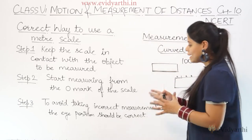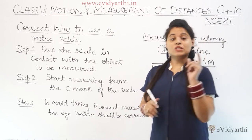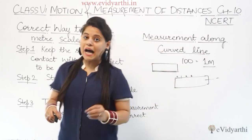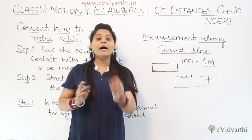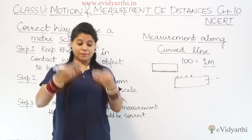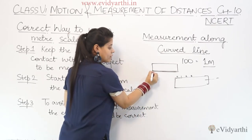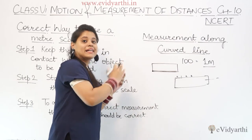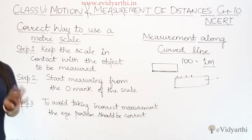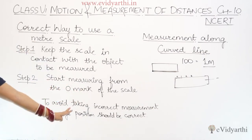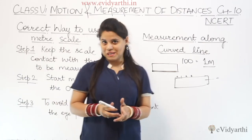Step 3: to avoid taking incorrect measurements, the eye position should be correct. This is a very important point. If you look from the side — left or right — the reading will not be correct. You must look straight at the scale from the center, directly above the marking. When your eye position is correct and centered, you will get the correct measurement.